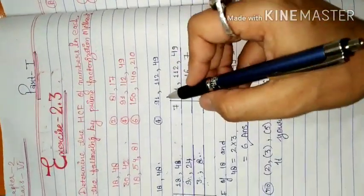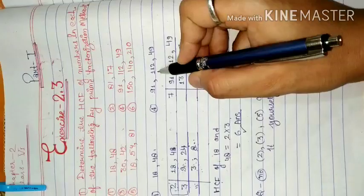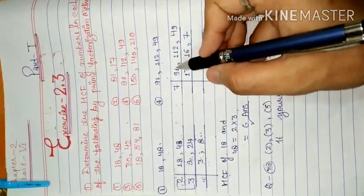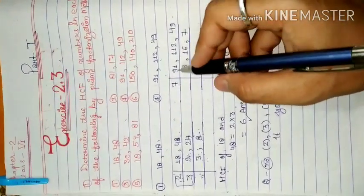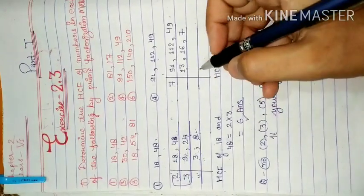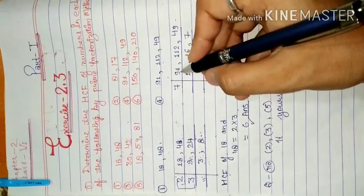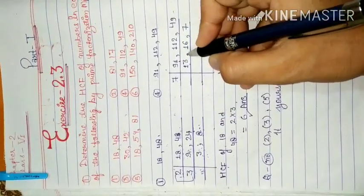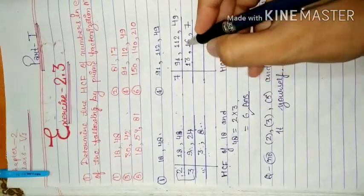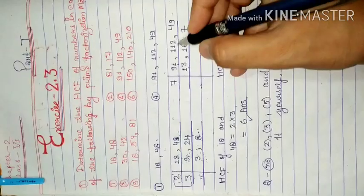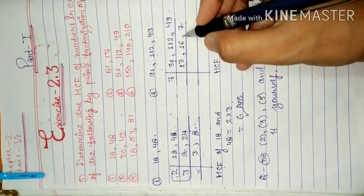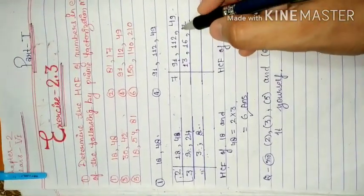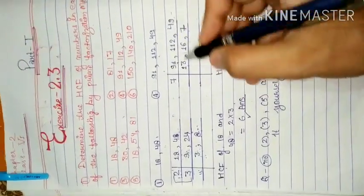Next question is 91, 112, and 49. Look, these three numbers will be divided by 7. 7 times 7, how much? 2 times 7 is 14, then 21. 7 times 7 is 49. 7 times 6 is 42. 7 times 7 is 49. These three numbers will be divided by 7.